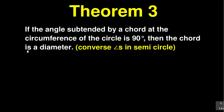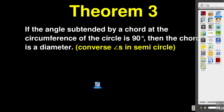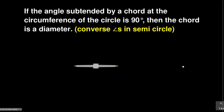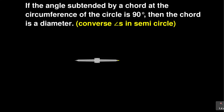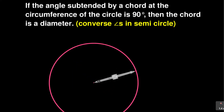Now there is a converse of that theorem. It says if the angle subtended by the chord at the circumference of a circle is 90 degrees, then the chord is a diameter. So when I'm talking about the converse of this theorem — the reasoning behind it says converse of angles in a semicircle. So what we're saying is: if I have a circle like this — if the angle subtended by a chord at the circumference of a circle is 90 degrees.